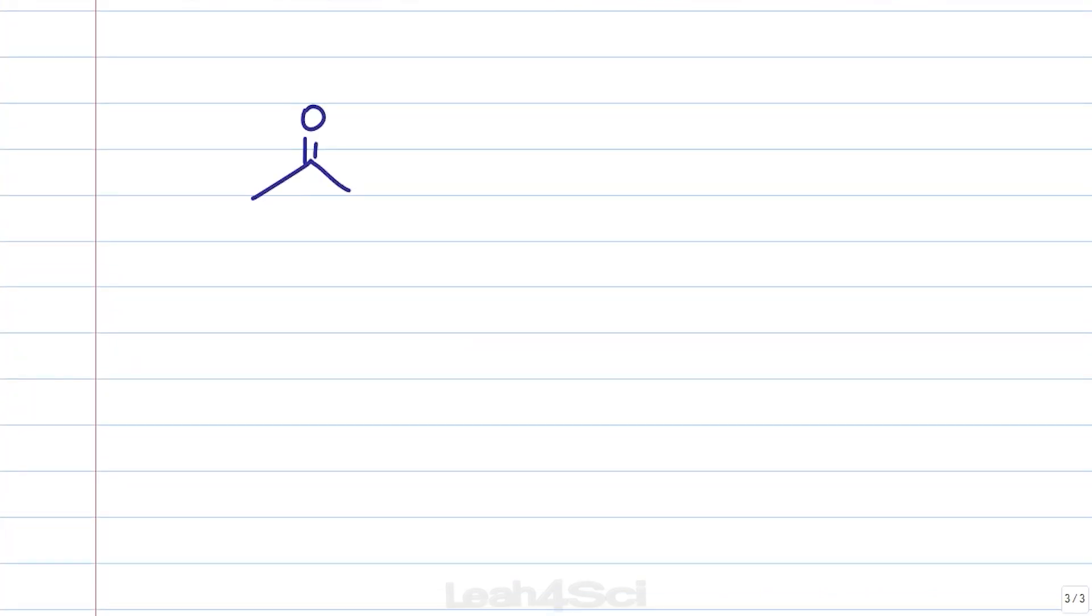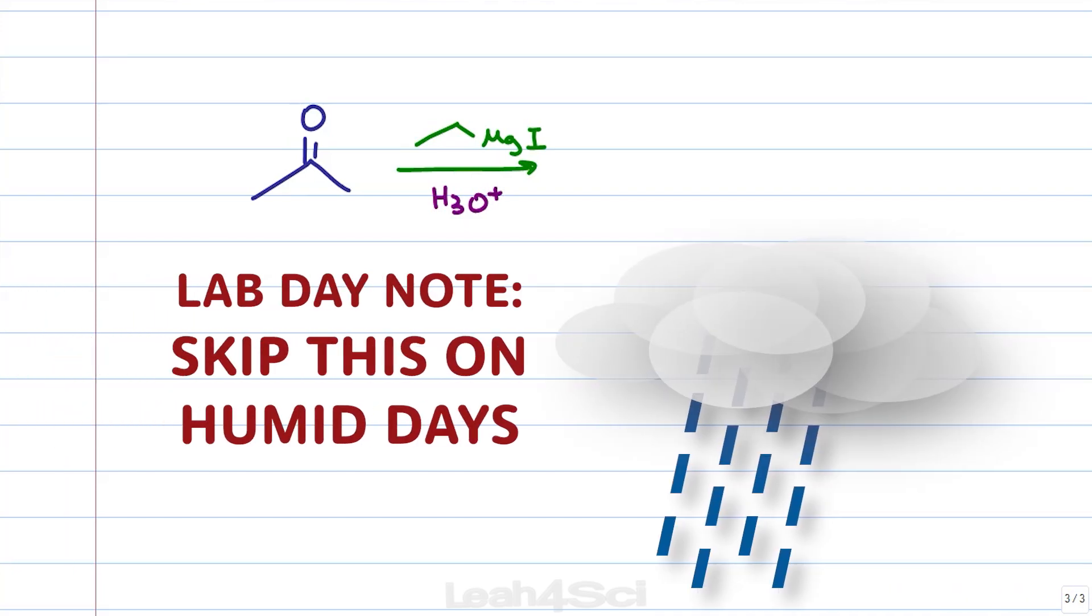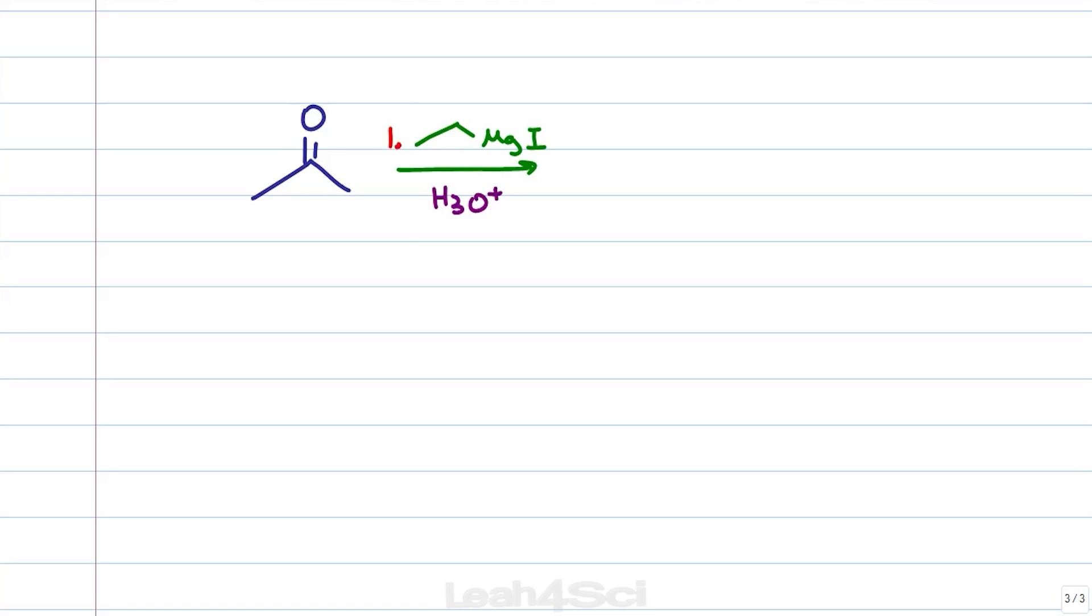If I were to write out this reaction with the steps instead of the mechanisms and I drew it like this with an MgI and then added H3O plus, this would be completely incorrect. Remember, Grignards are going to attack acidic or polar protic groups and that will destroy your Grignard. To make sure you get full credit, add the one to show that the Grignard attack is the first step and then two to show that the acid workup is your final step after the reaction is done to give the final alcohol product.